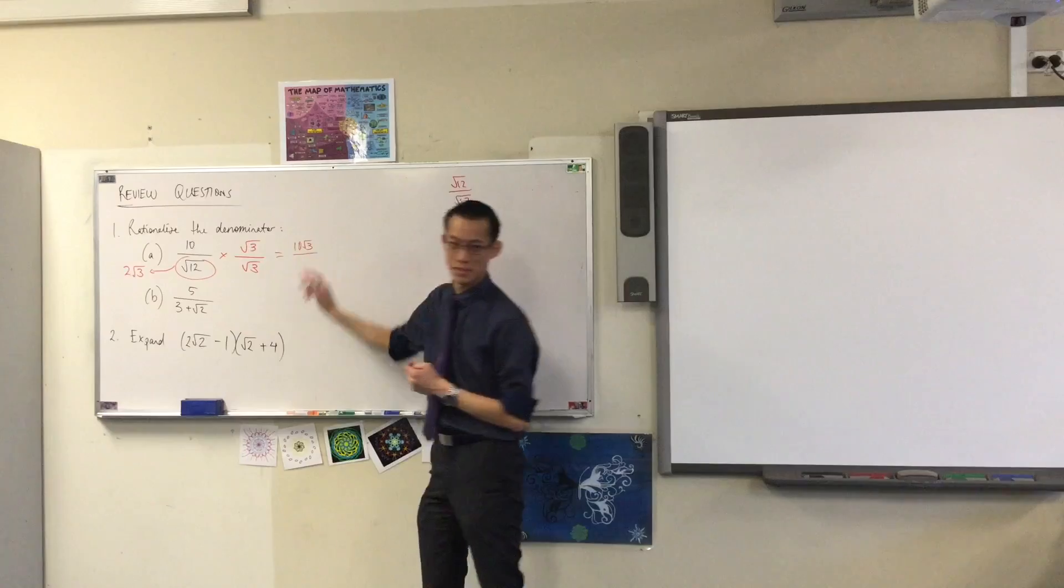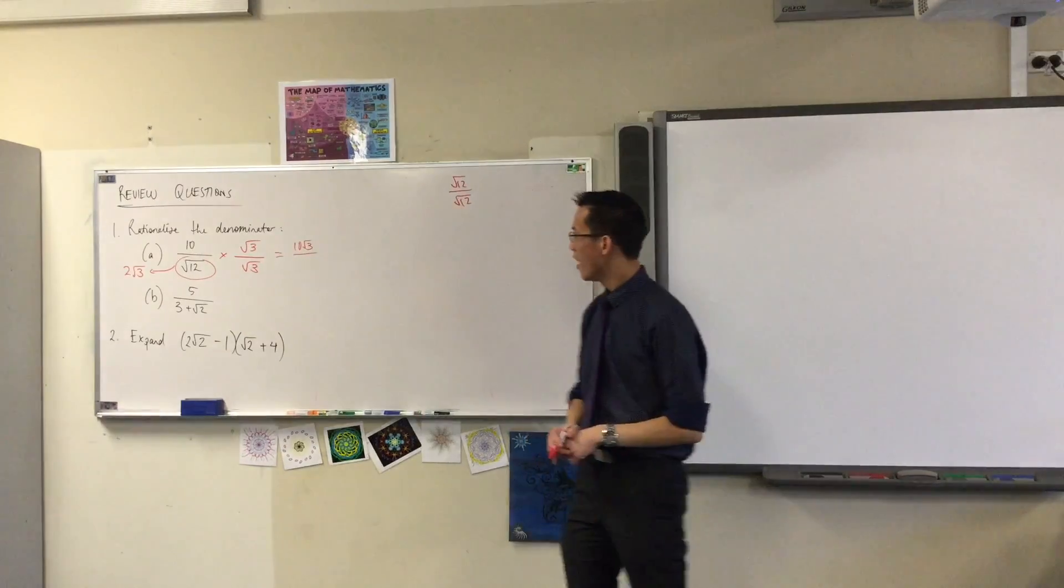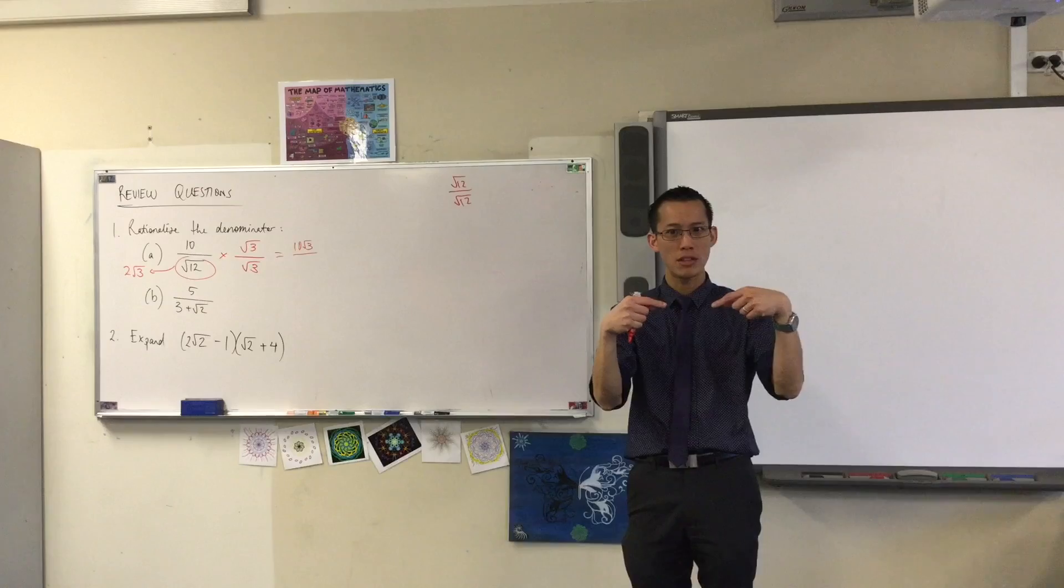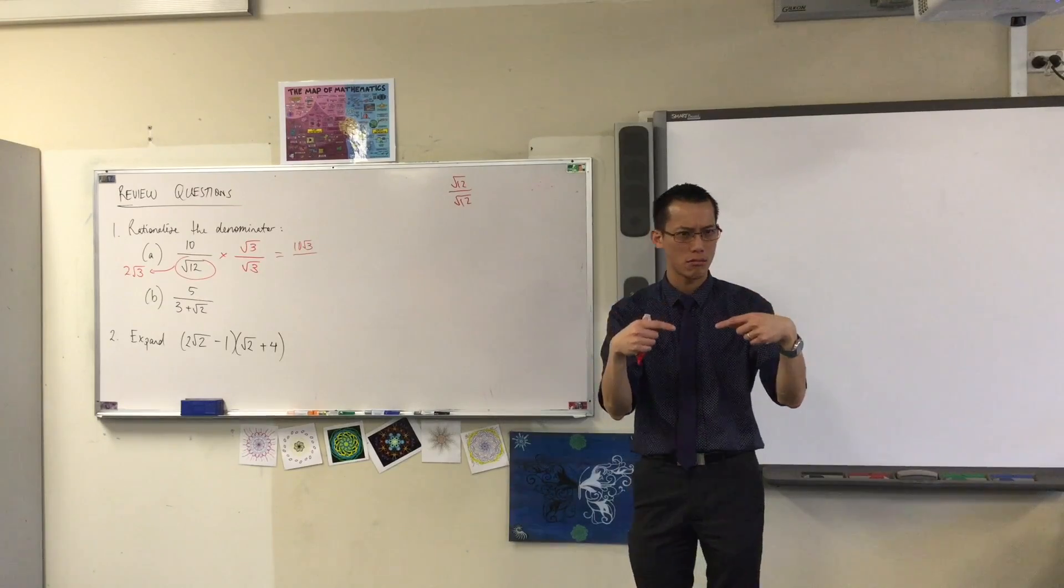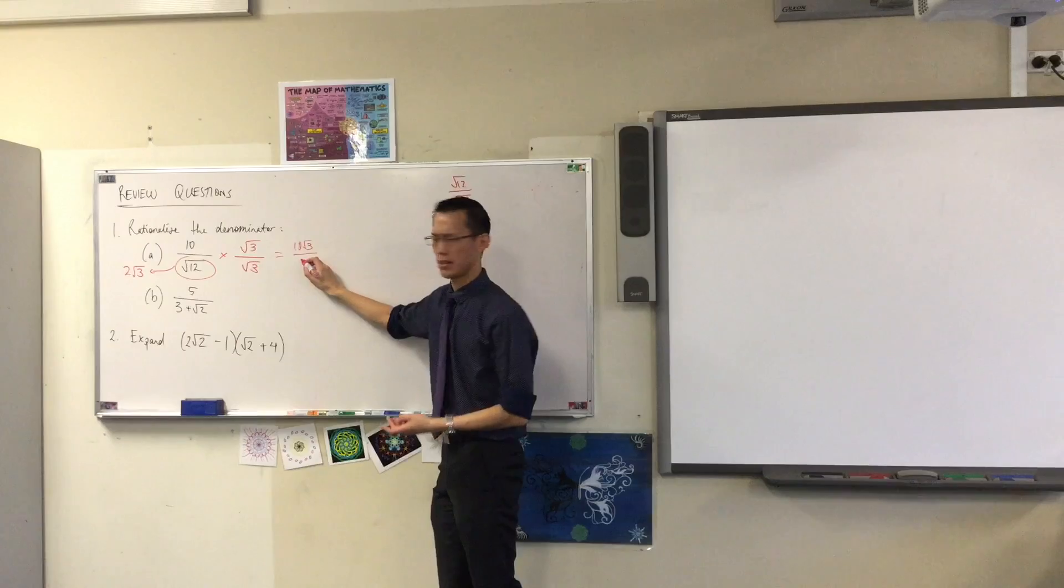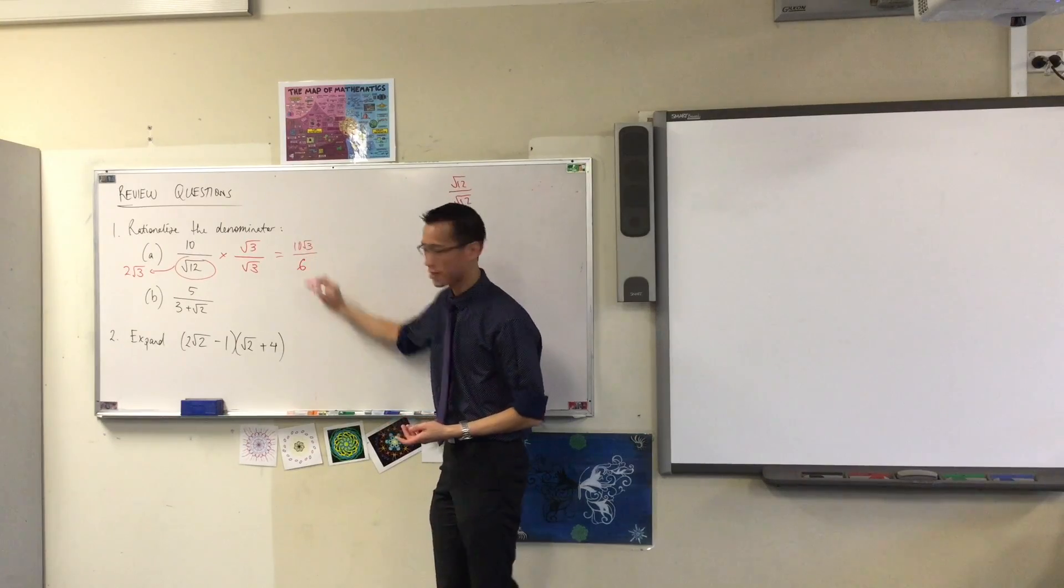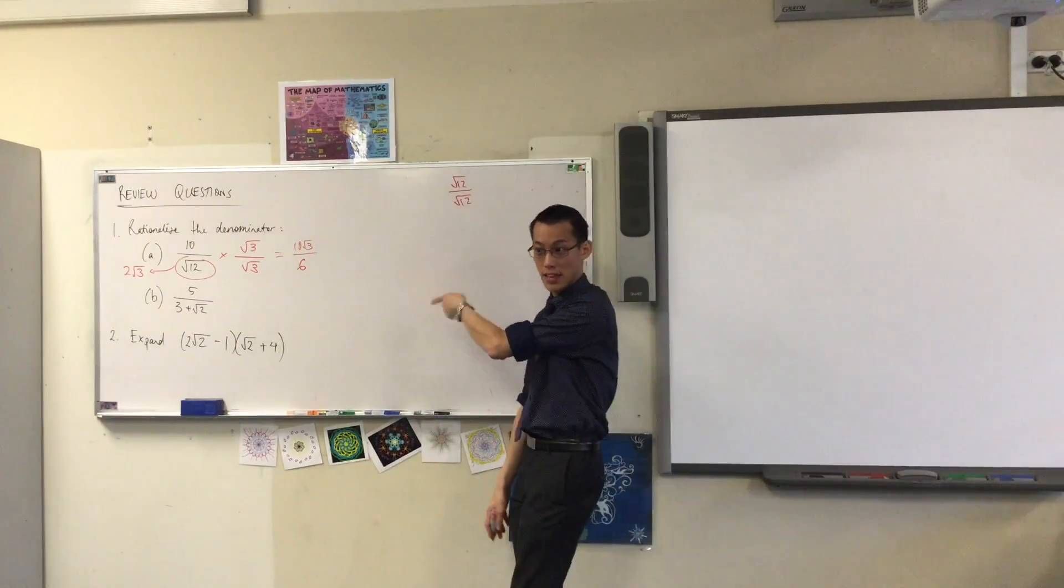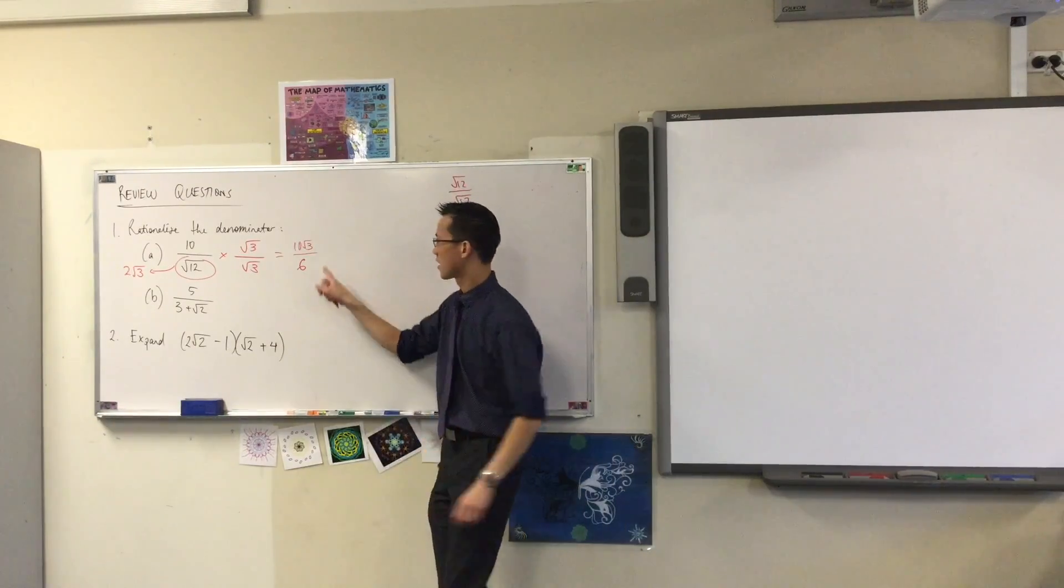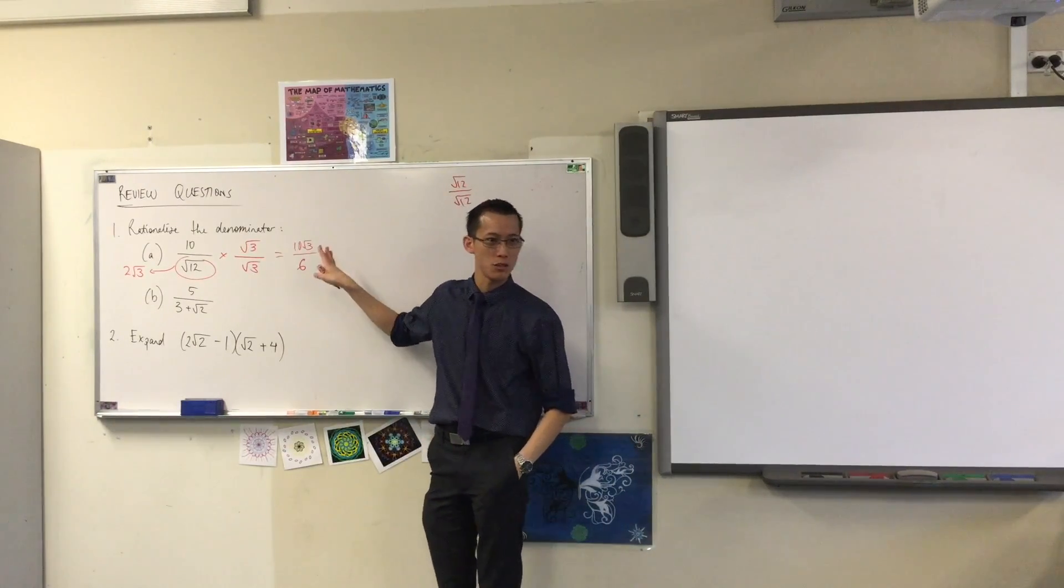Why is this a better way? What do you get on the numerator? 10 root 3, because that's all there is on the top, right? When you do root 12 times root 3, what happens to the numbers underneath? You get root what? 12 times 3, which is 36. The square root of 36 is 6. Now you'll get this eventually if you multiply by root 12. You'll just get there after an extra line. Can we do this any better? Are we done, or can I do better?